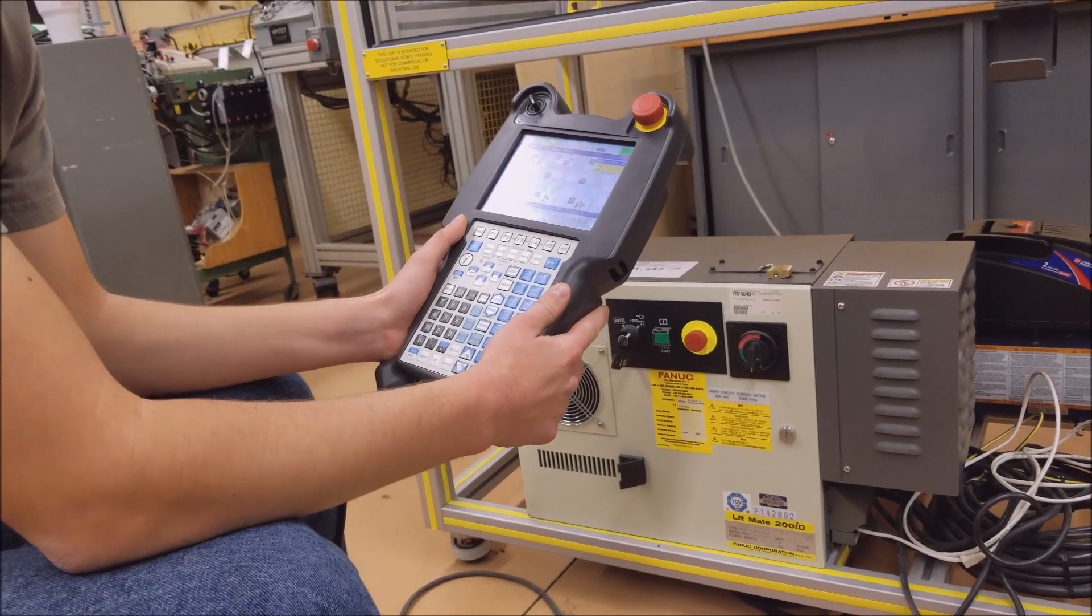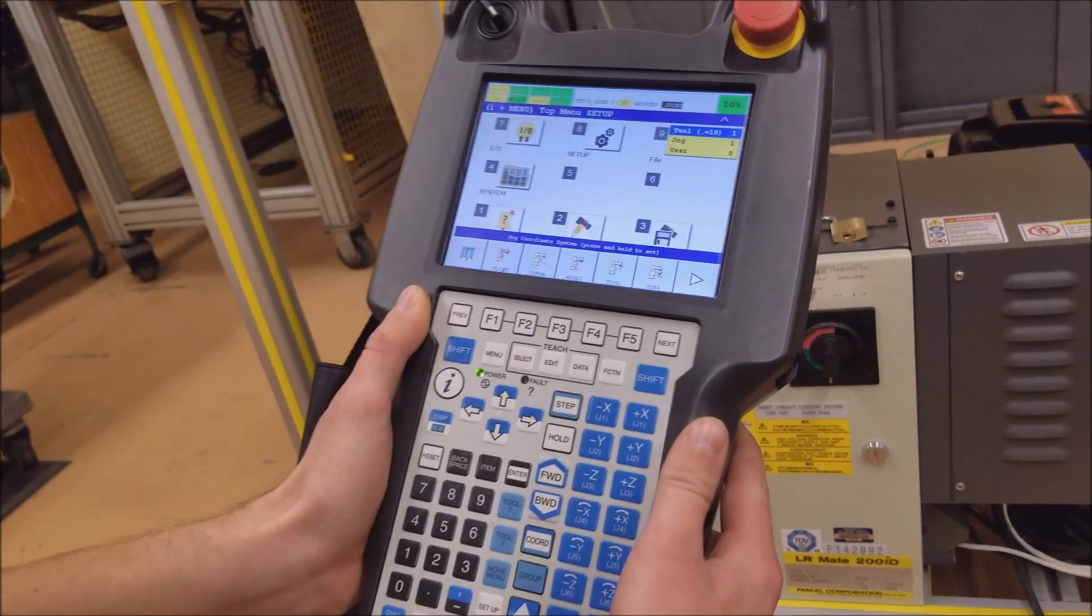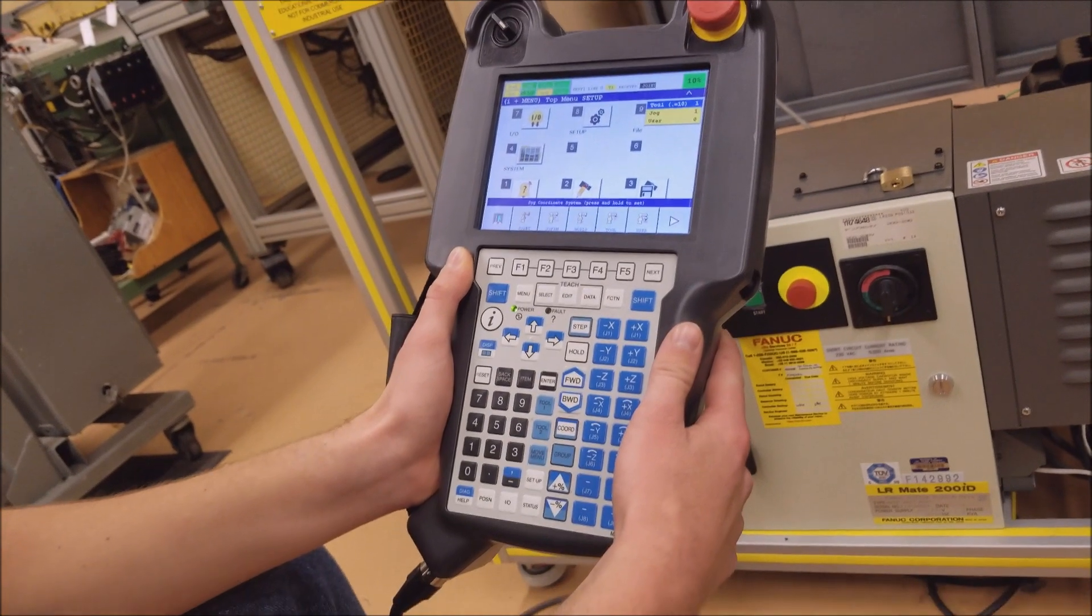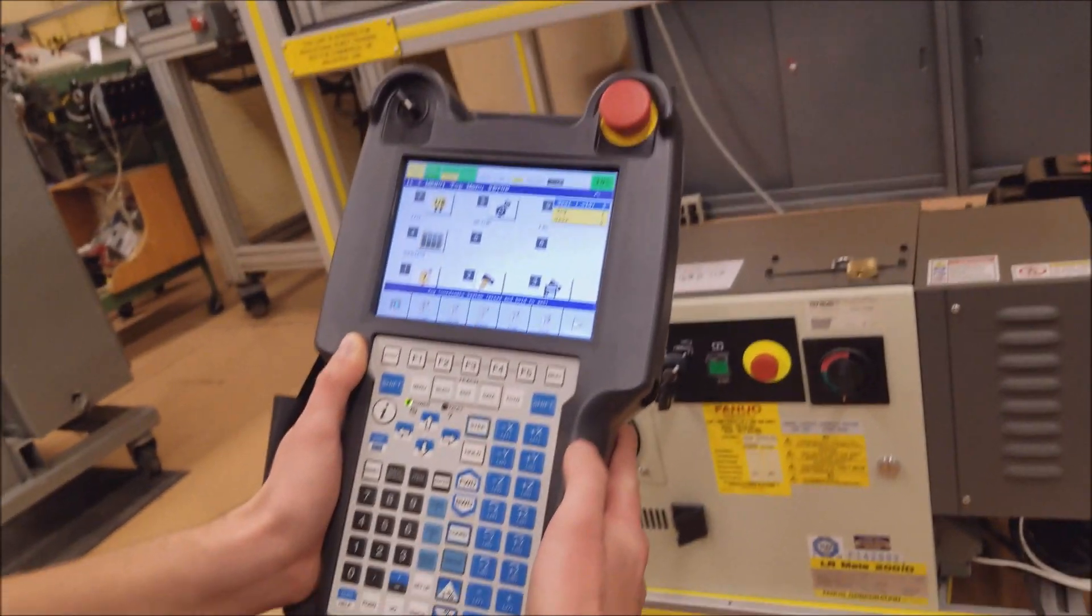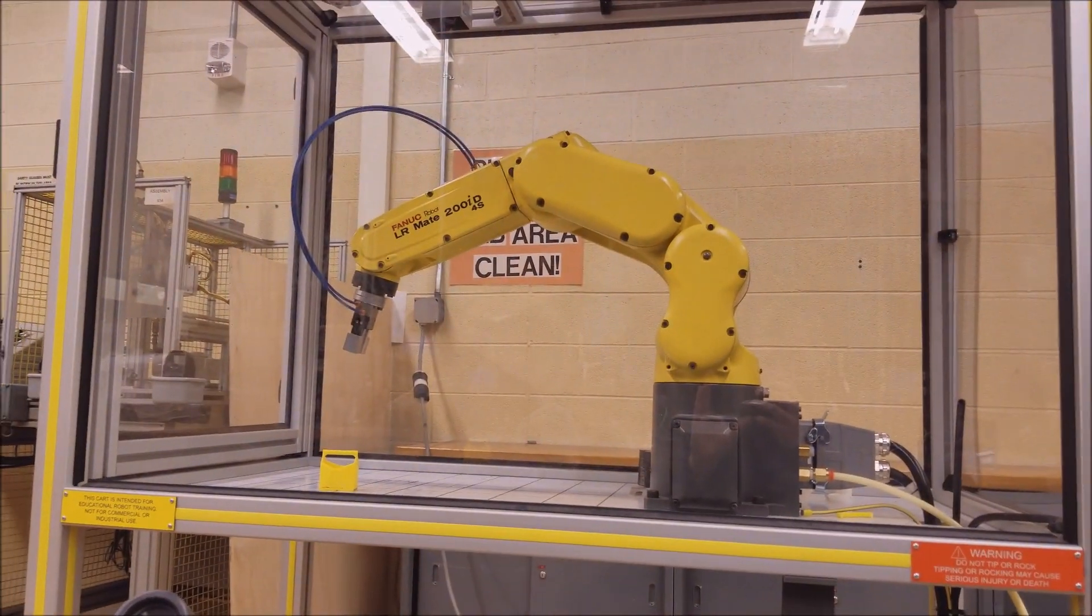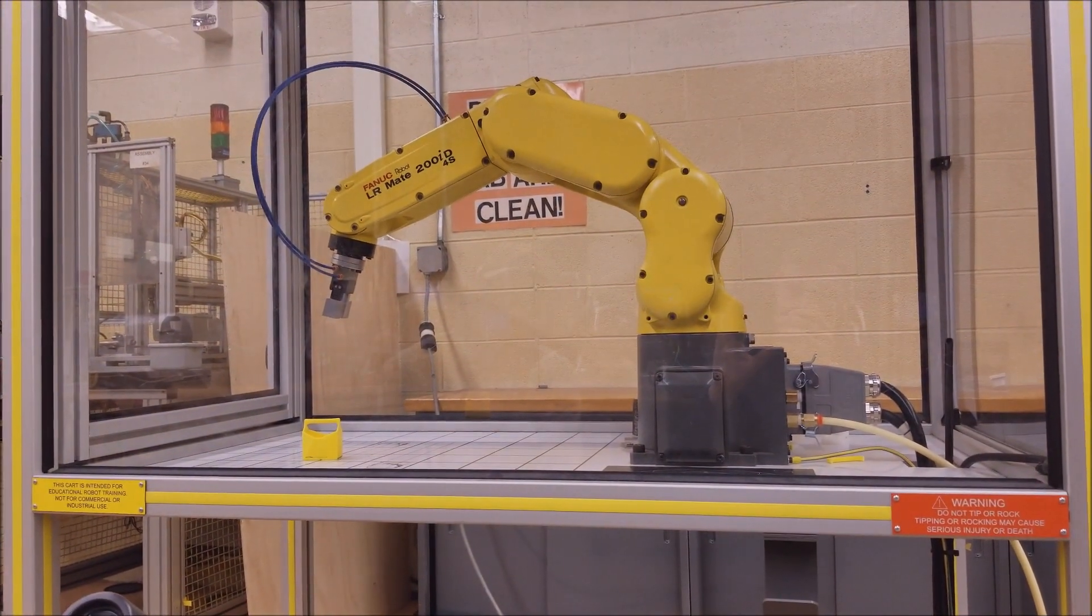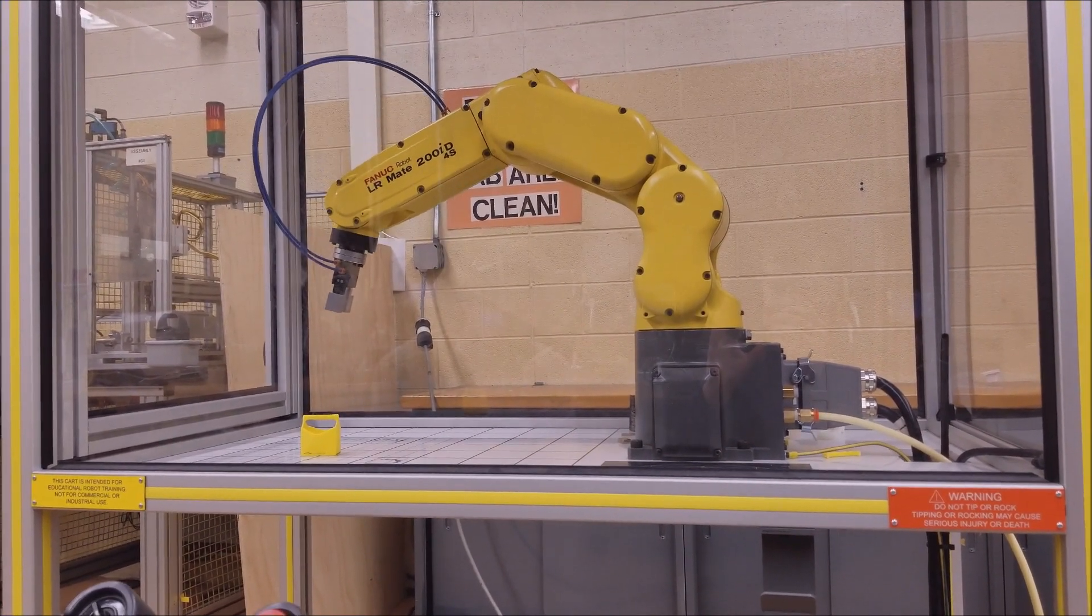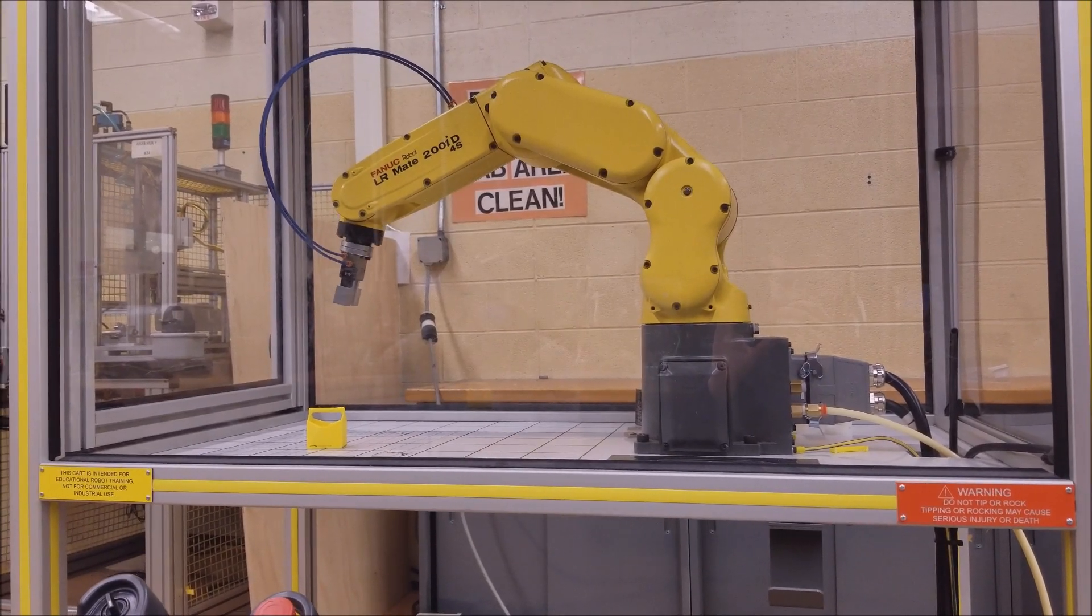All right, so we're going to show you the three basic modes that we would jog the robot in. I'm going to start with joint mode, which if you look at the robot and I try to move—I have to speed—axis one, two, three, four, five, and six. So joint mode basically moves each axis individually.